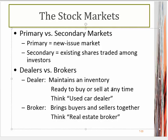A dealer essentially maintains an inventory and is ready to buy and sell at any time. Think of this like being a used car dealer — they have a price they're willing to pay you if you want to sell, and a price they expect you to pay if you want to buy. They buy at wholesale and sell at retail; that's how they make their profit. A broker, though, is a person who brings together buyers and sellers — more like a real estate broker. They bring buyers and sellers together and they haggle out the price between themselves.